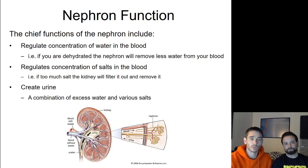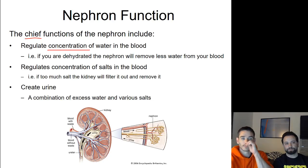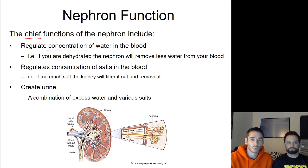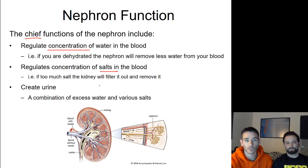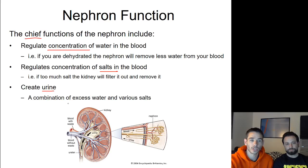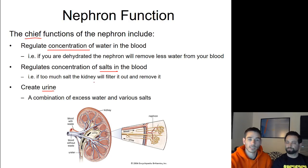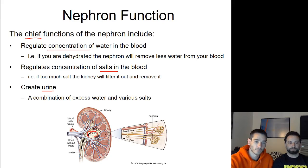Here are the main functions of the nephron you should know. First, it regulates the concentration of water in our blood — if we have too much water it removes some, and if we're dehydrated it removes less. It also regulates the concentration of salts in our blood, removing excess salt. Ultimately, the nephron's job is to create urine — a combination of excess water and various salts — and millions of nephrons drain that urine into the ureter and bladder.